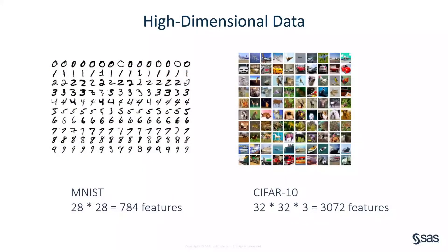This phenomenon is more obvious when we deal with images. For example, the simple MNIST dataset contains grayscale handwritten digits of 28 by 28 pixels, a total of 784 features. The color images in the CIFAR-10 dataset are 32 by 32 pixels. Because they are all color images, this results in more than 3,000 features — too many for traditional clustering methods to give you an accurate estimate.